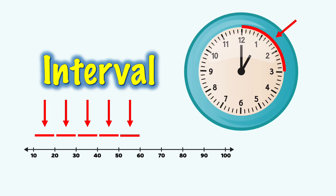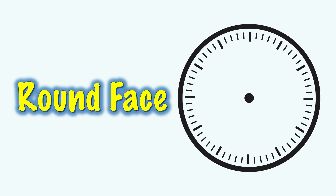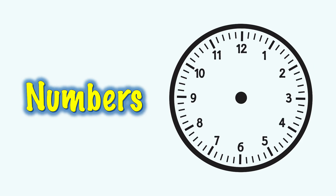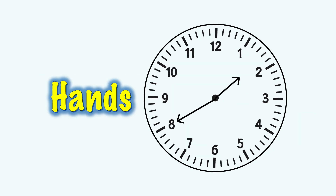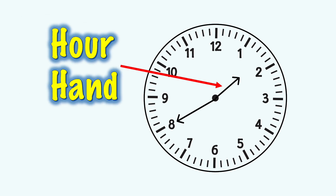Let's review what we've learned. Math vocabulary: an interval is an even space between things. An analog clock is a clock that has a round face, numbers, and two hands that move. A minute hand is a long hand on the face of an analog clock — it tells us the minutes.